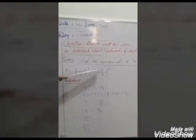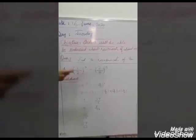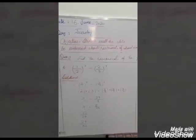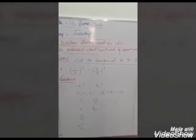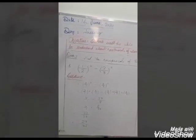The question is: (1/2) whole power minus 2 divided by (2/3) whole power minus 3. As you can see, 1 by 2 is the base, minus 2 is the exponent, divided by 2 by 3 as the base and minus 3 as the exponent. First, convert the negative power into positive.